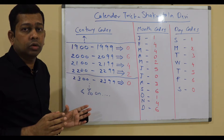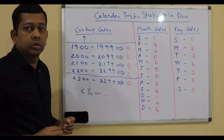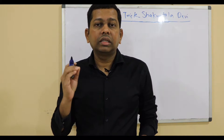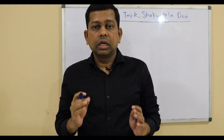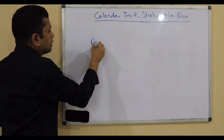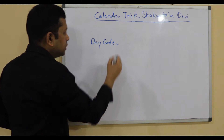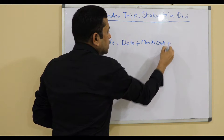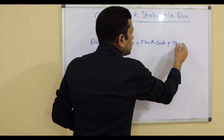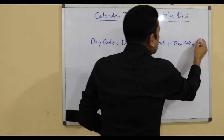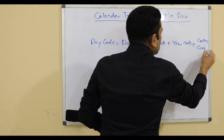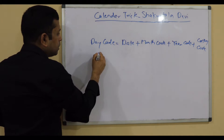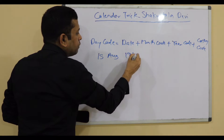With those century, month, and day codes, you can do the magic Shakuntala Devi used to do. Now let's come to the formula. Once you commit the codes to memory, the formula to arrive at the day for a particular date is: Day code = date + month code + year code + century code. Let's take an example — when India got independence: 15th August 1947.